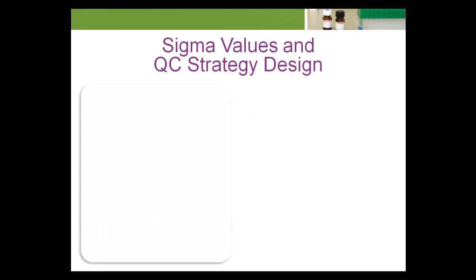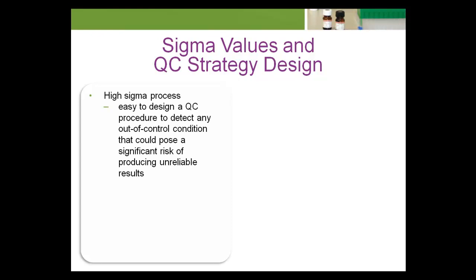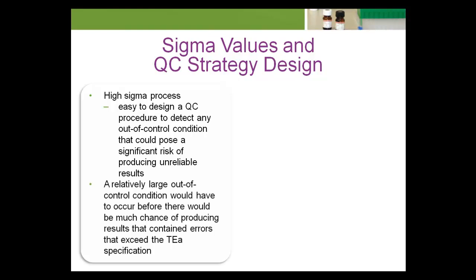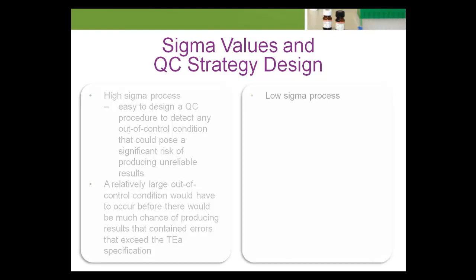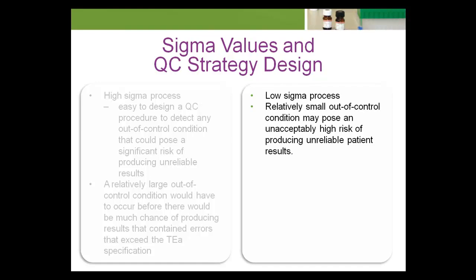Sigma values are useful for guiding QC strategy design. For a high sigma process, it is relatively easy for the laboratory to design a QC procedure to detect any out-of-control condition that could pose a significant risk of producing unreliable results. A relatively large out-of-control condition would have to occur before there would be much chance of producing results that contained errors exceeding the TEA specification. On the other hand, for a low sigma process, a relatively small out-of-control condition may pose an unacceptably high risk of producing unreliable patient results, and it can be challenging to design QC procedures that are good at detecting small out-of-control conditions.